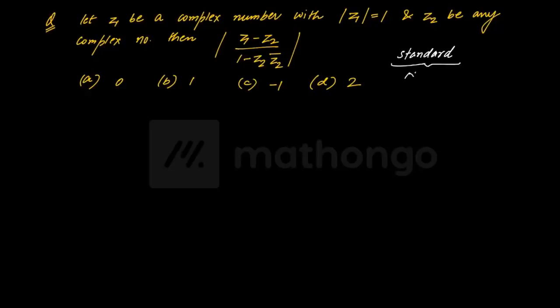Standard hai. Dekha jaaye yeh - jo log CBSE board ke hain, jinka NCERT follow hota hai, NCERT textbook ka question hai. Question kya kehta hai - z1 be any integer which is satisfying mod z1 equal to 1. So z1 aisa complex number hai jiska modulus 1 hai. Toh yaar, iska matlab - any number jo z1 plus iota 0, that is equal to 1 hoga, woh bhi toh isi mein fall karega. Toh main z1 ko 1 maan lunga.